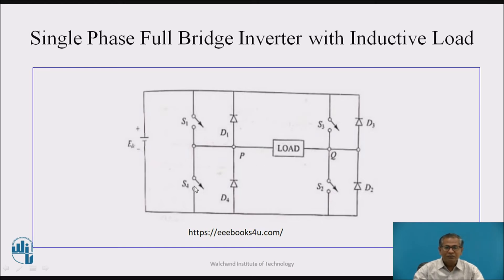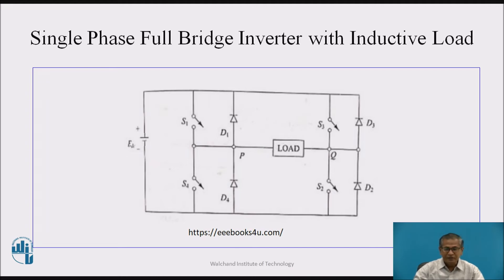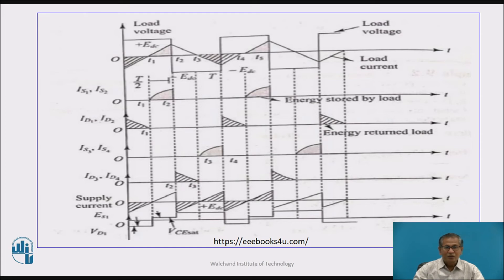When S3 and S4 turn off, the highly inductive load tries to maintain the current in the same direction. Therefore, Q becomes negative and P becomes positive, forcing current in the same direction. The stored inductive energy is fed back to the source through: Q → load → P → D1 → EDC → back through D2. In this duration, the load voltage is positive but the load current is negative. These are the waveforms.